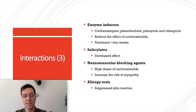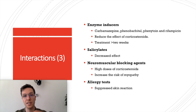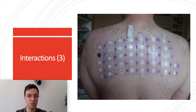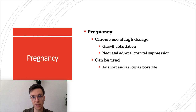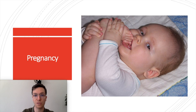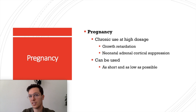When combining prednisolone with salicylates, their effect will be decreased. When combining with neuromuscular blocking agents, especially at high corticosteroid doses, there is an increased risk of myopathy. Lastly, when performing an allergy skin test in someone taking prednisolone, the skin reaction may be suppressed, making the test unreliable. Regarding pregnancy: especially chronic use at high doses may lead to growth retardation and neonatal adrenal cortical suppression in the baby, so use the lowest possible dose for the shortest possible time.